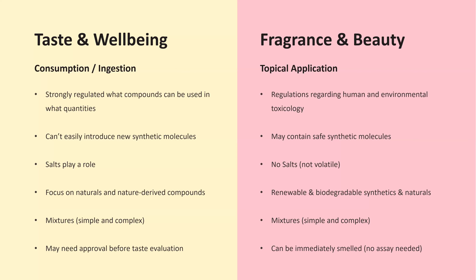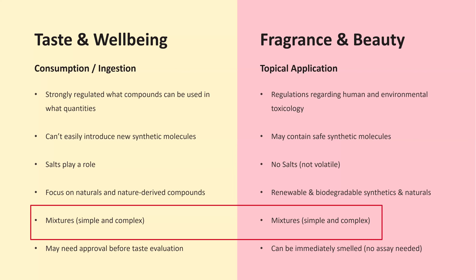Importantly, mixtures play a role in both divisions — simple and complex mixtures. In this context it's more about simple mixtures, which we need to handle in a chemical registration system. For example, you have a natural product which is already a mixture, you do a reaction with it, and the output is also a mixture that you need to deal with.